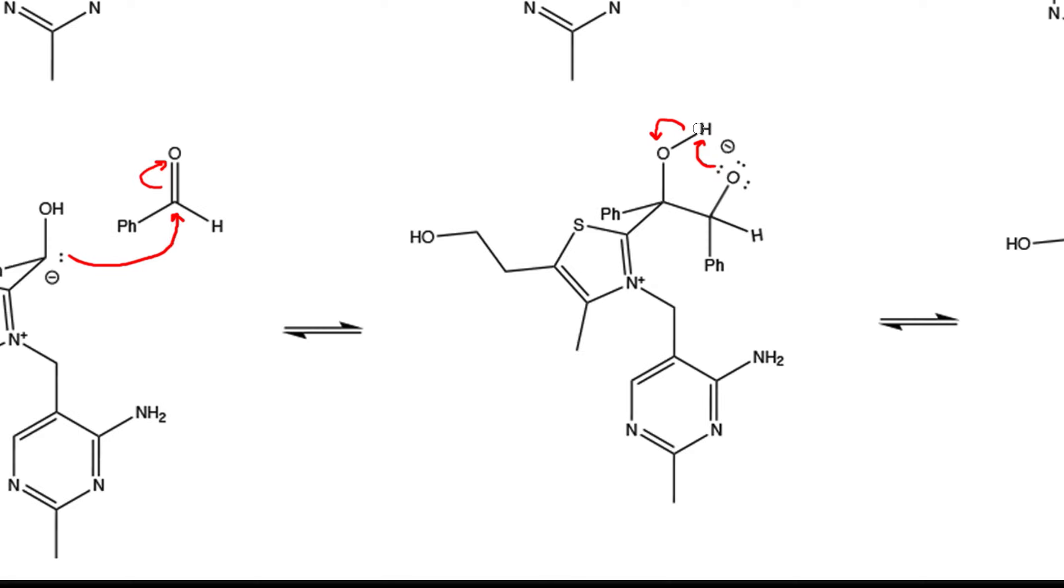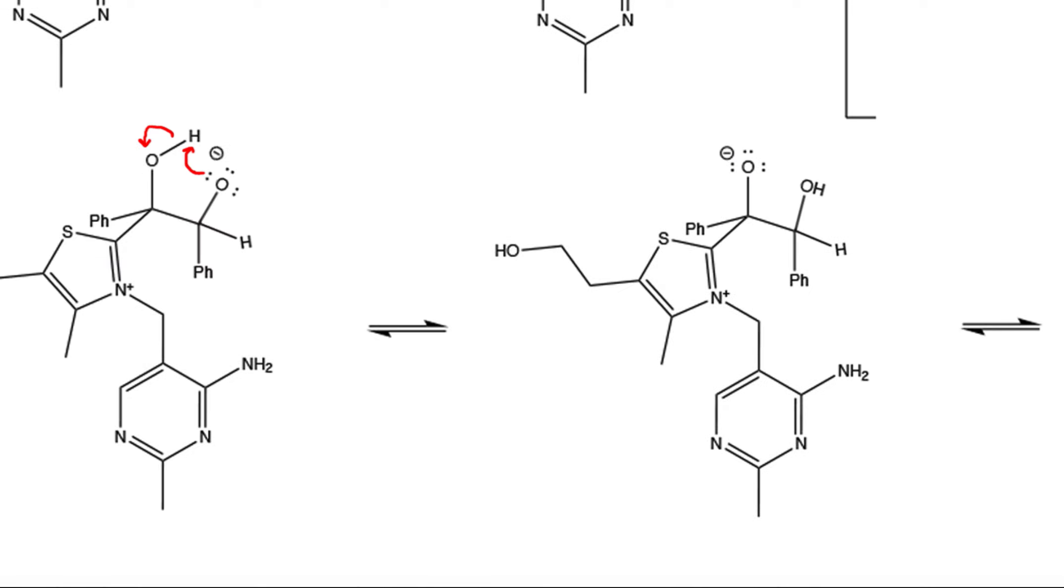The transferring of this proton is fairly stable due to the five-member ring that forms during the transition state. Next, the lone pairs on this oxygen reform our pi bond and we expel our thiamine as the leaving group.